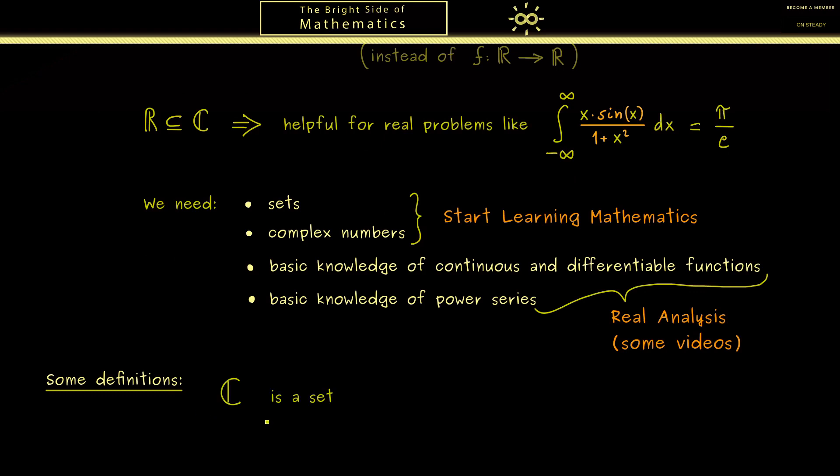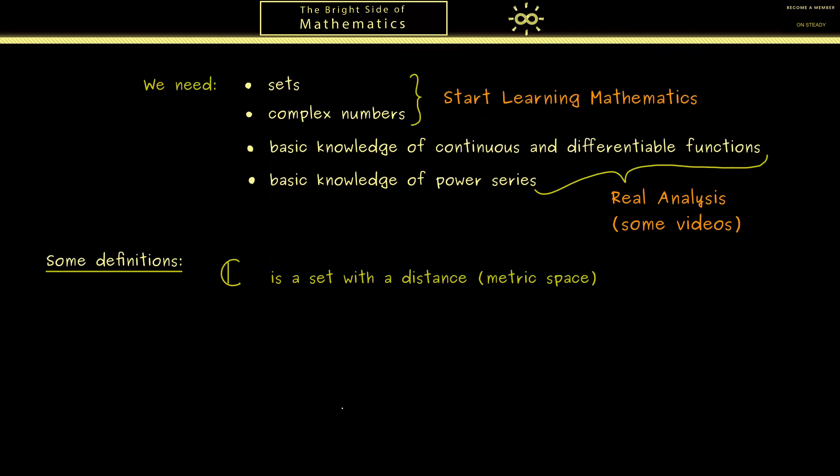First I can tell you the complex numbers form a set with a distance function. Formally we call such a construction a metric space. But don't worry it's not complicated at all. It just means that the distance between two elements of the set makes sense. And of course we can immediately visualize this in the complex plane. This means that a complex number z can be found in this plane. And on the x-axis we find the real part of z and on the y-axis the imaginary part.